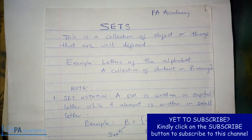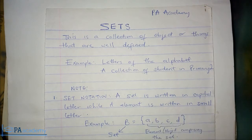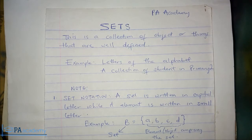We are going to be looking at an introduction to sets, finite sets, infinite sets, subsets, and equality of a set — so the different types of sets. We are also going to be looking at the Venn diagram, union and intersection of sets, complement of a set, and different types of examples under sets and under the Venn diagram.